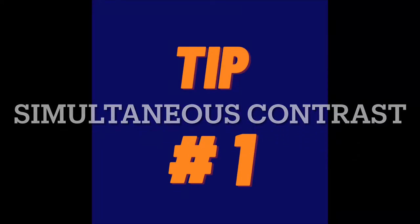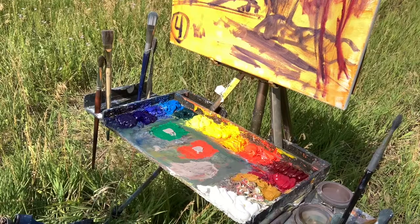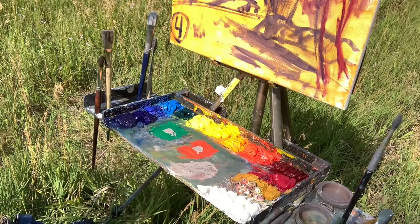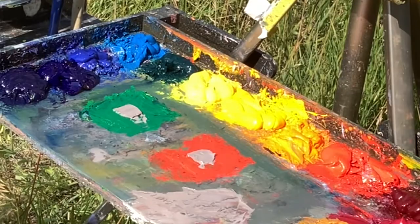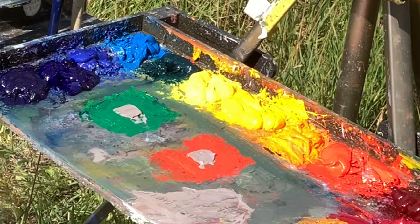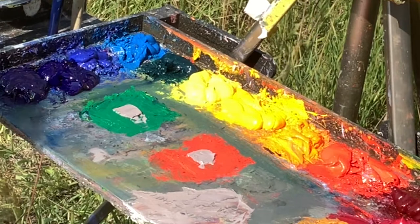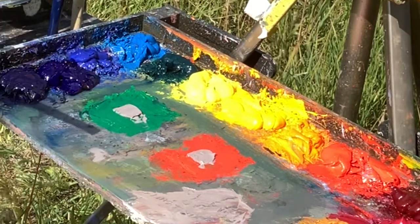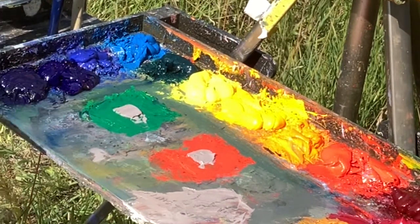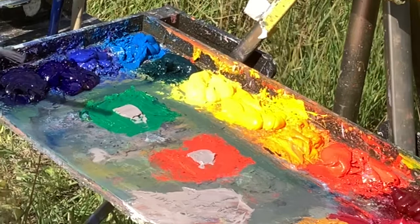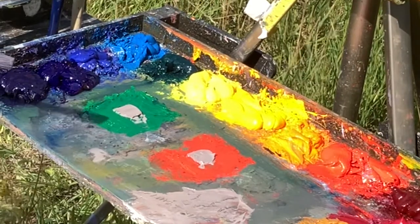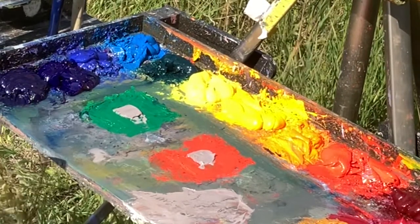Lean in close with me here for a minute before we put some paint on the canvas. Tip number one: simultaneous contrast. If you read some color theory books, it essentially states this — that for any given color, the eye simultaneously requires the complementary color, and the eye generates it spontaneously if it's not present. Isn't that so weird, but so crucial?